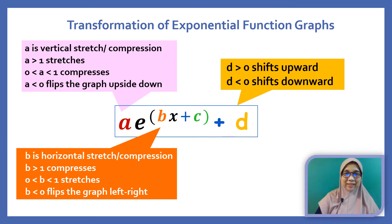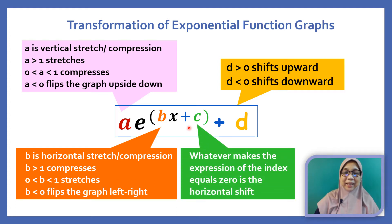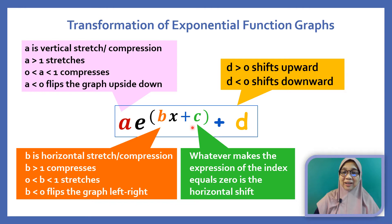Here is another method to transform the exponential graphs. The transformations for A, B, and D are the same. But observe the expression Bx plus C — it is grouped together. Thus, the horizontal shifting is obtained by equating Bx plus C to 0. If x equals negative C over B, we shift the graph to the left. If x equals C over B, we shift the graph to the right.